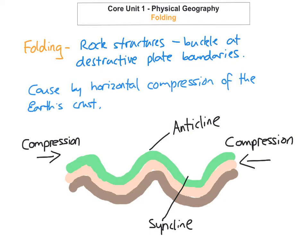In between the anticlines, the point on the side of the fold is known as the limb. So those points there — that point, that point, and that point — those are all limbs. They're just important parts of the fold that you need to know.